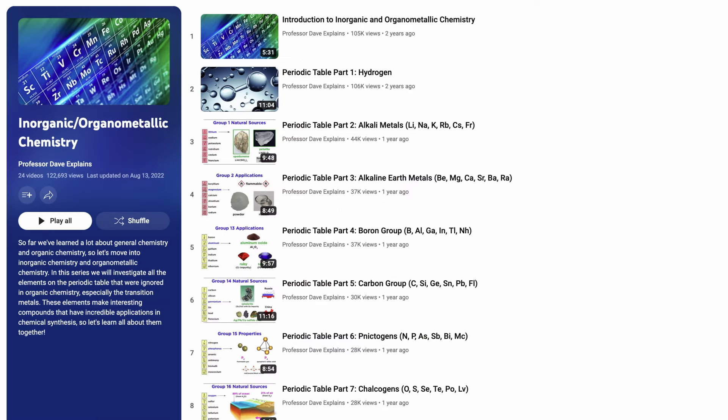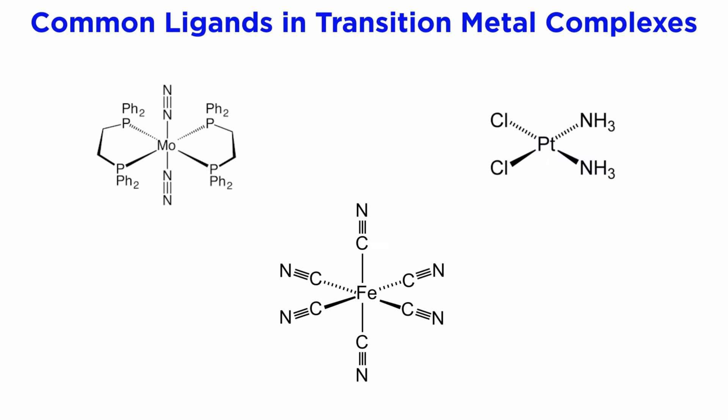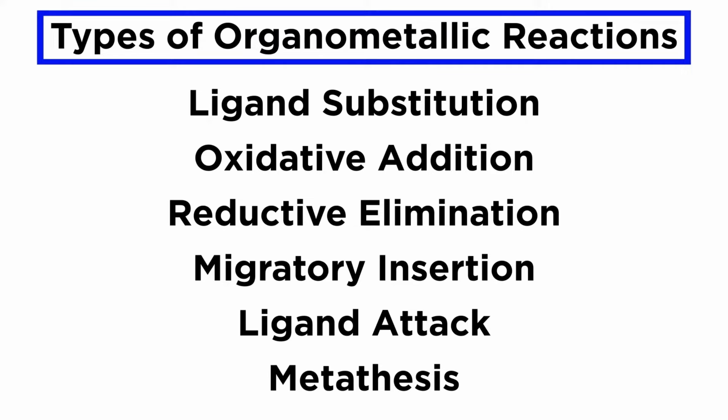So far in this series on inorganic and organometallic chemistry, we have performed an extensive survey of the periodic table, introduced concepts regarding transition metal complexes, and the basic types of organometallic reactions.